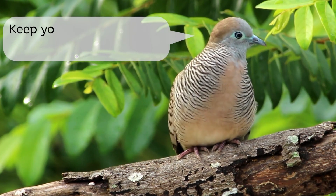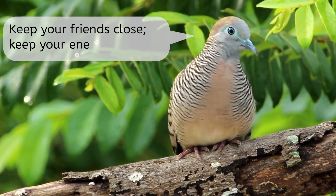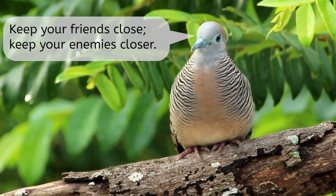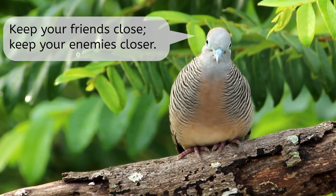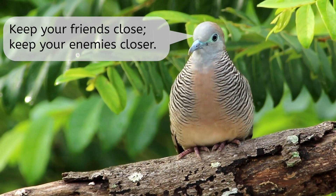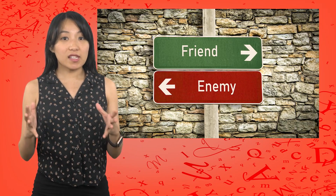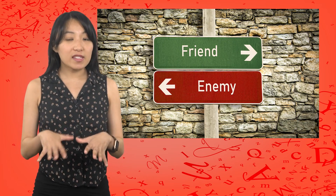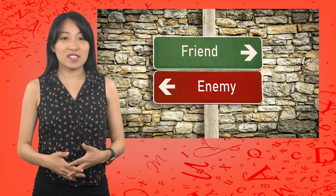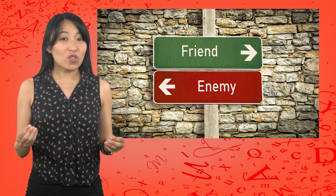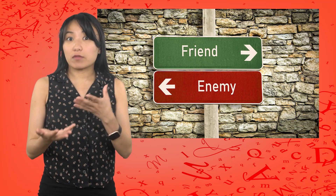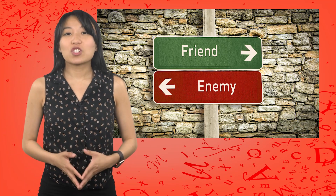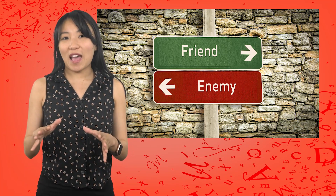Keep your friends close, keep your enemies closer. That's a little ominous for a bird. The juxtaposition of friends and enemies helps make this statement stay with the audience. This contrast is a hallmark of antithesis. It's also easy to remember and repeat, which can give a phrase more impact.